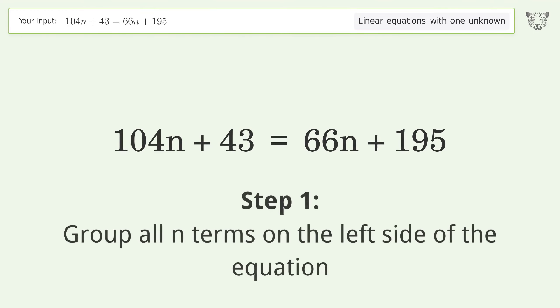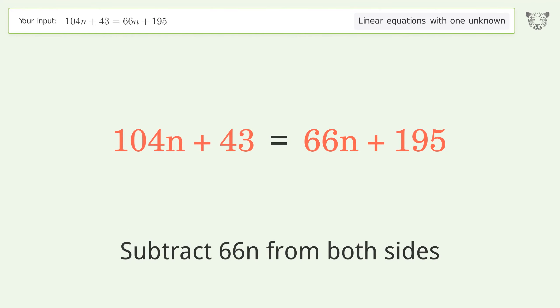Group all n terms on the left side of the equation. Subtract 66n from both sides.